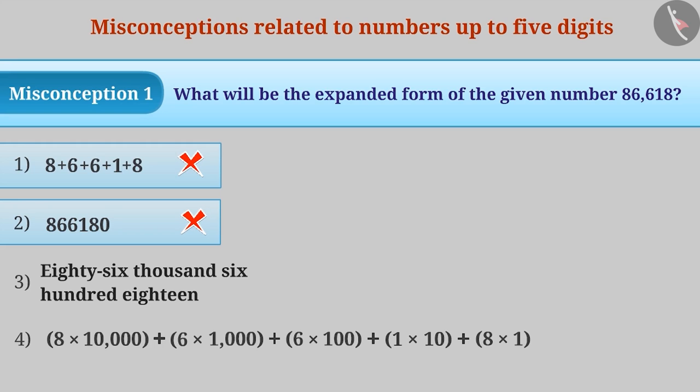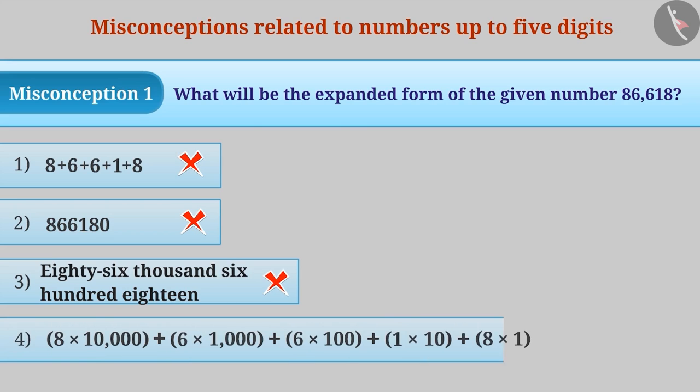For some, expansion of a number means writing the number in letters or words and thus we get the result 86,618 which again is incorrect. The correct understanding is that option 4 is the right answer.